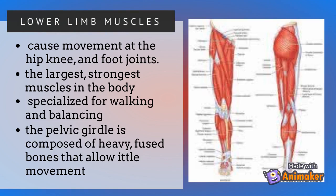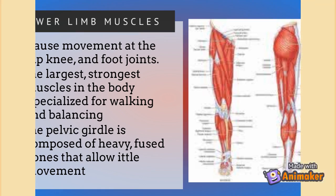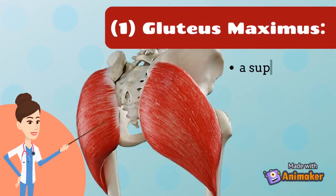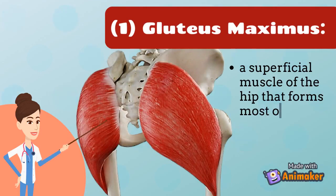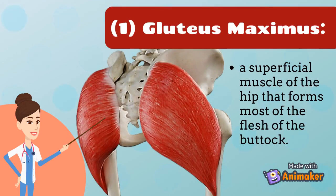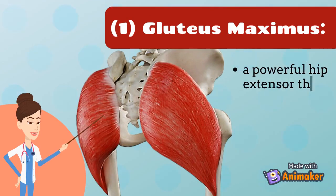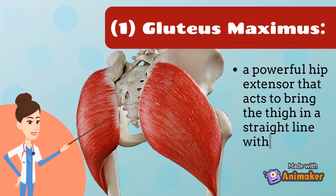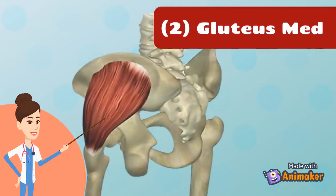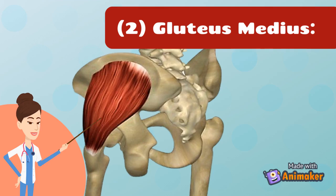The muscles of the lower limbs cause movement at the hip, knee, and foot. They are the largest and strongest muscles in the body, specialized for walking and balancing. The first lower limb muscle is the gluteus maximus — a superficial muscle of the hip that forms most of the flesh of the buttocks. It is a powerful hip extensor that acts to bring the thigh into a straight line with the trunk.